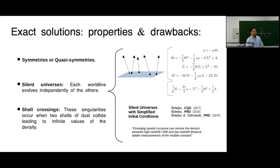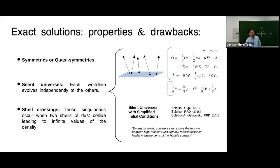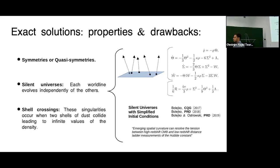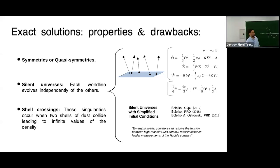This silent property has been used to go beyond exact solutions: one approach violates the constraint to gain more generality. Silent universe models have been used to model structure formation using this system of equations, actually simplifying numerical integration. One interesting result from these papers is that emerging curvature can help explain the tension in the measurement of the Hubble constant — something that models in this class can potentially address.